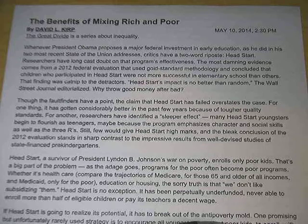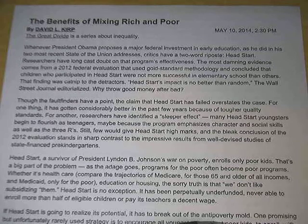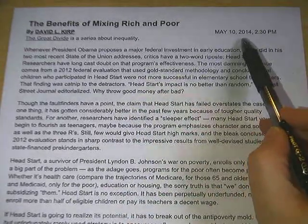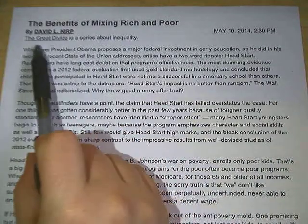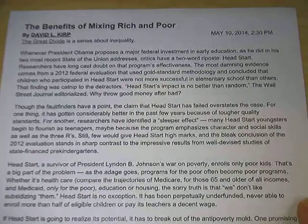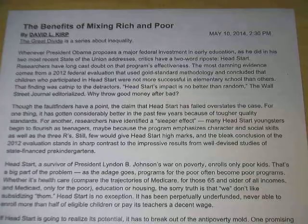Today we are going to look at applying four different types of evidence to an article. The article is called 'The Benefits of Mixing Rich and Poor' by David Kerp. It was published May 10th of 2014, and it was an article that appeared in a series about inequality in America.